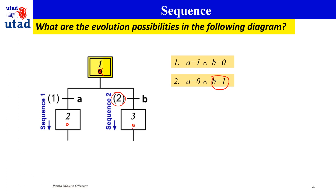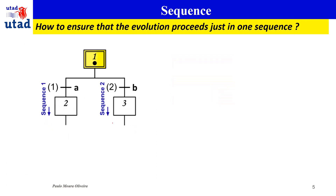We got yet another possibility where we have simultaneously A equals to 1 and B equals to 1. In this case, both transitions are going to be cleared at the same time, and the token leaves the initial step — we get a token in step 2 and in step 3. This is a different situation where we selected both of them, giving a kind of parallelism between the two sequences. So how can we ensure that the evolution proceeds in just one sequence?